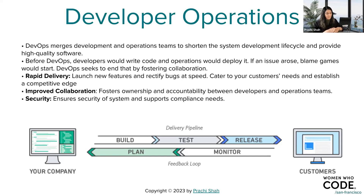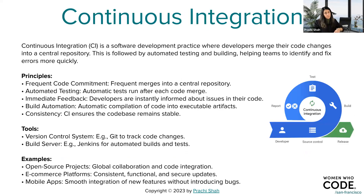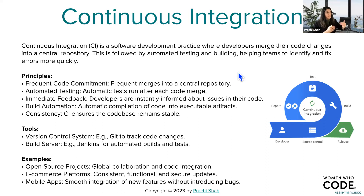Feel free to add questions in the chat; I'll take those towards the end of the session. One of the important parts of developer operations is continuous integration and continuous delivery — called CI/CD. I'll break it down because CI and CD are very different concepts that go hand in hand. Continuous integration is a software development practice where developers merge their code into a central repository, followed by automated testing and building, helping teams identify and fix errors more quickly.